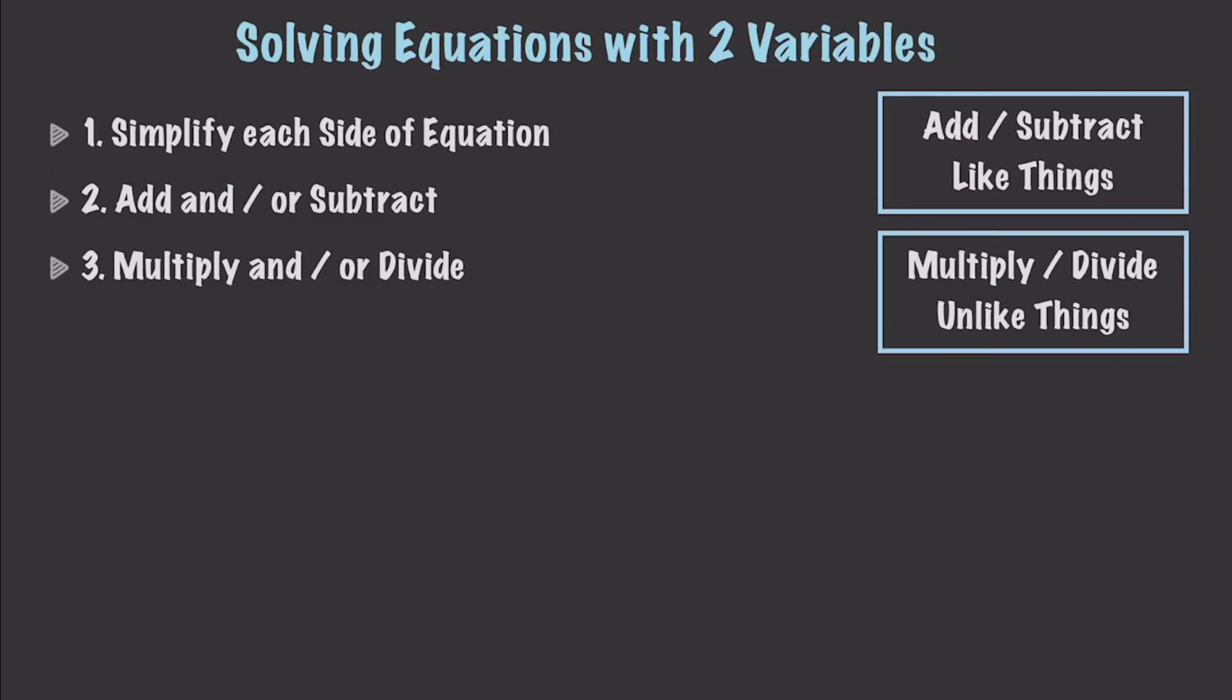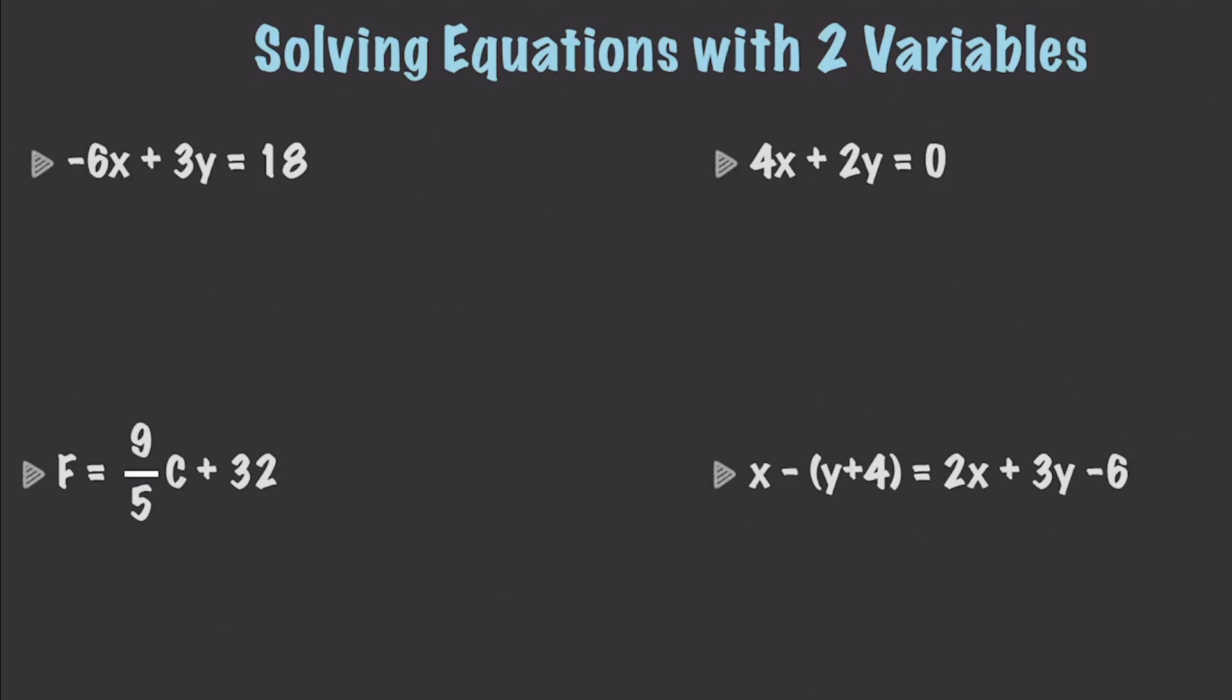Solving equations with two variables is handled in much the same way as whenever you solve for one variable. We simply simplify both sides, add and subtract like terms, multiply and divide unlike terms, and get a single variable alone on one side of our equation. I'm going to teach just like previously by just solving a whole bunch of problems.